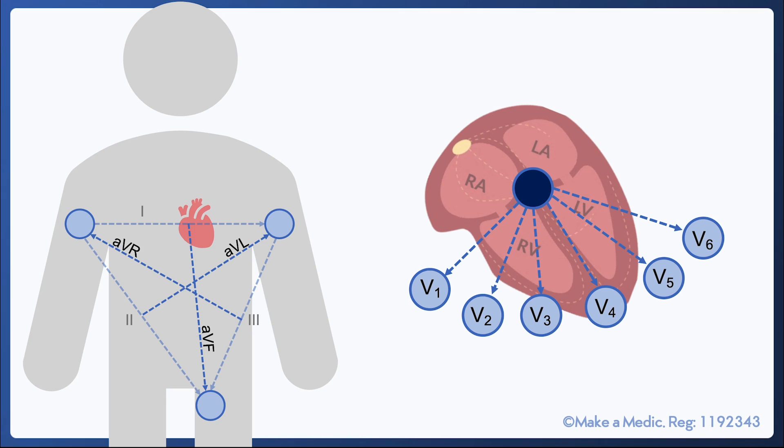The chest leads view the heart in the horizontal plane. Each electrode is positive and the negative pole is generated by averaging out the inputs from the three active limb electrodes. This imaginary negative pole is located at the center of the heart.